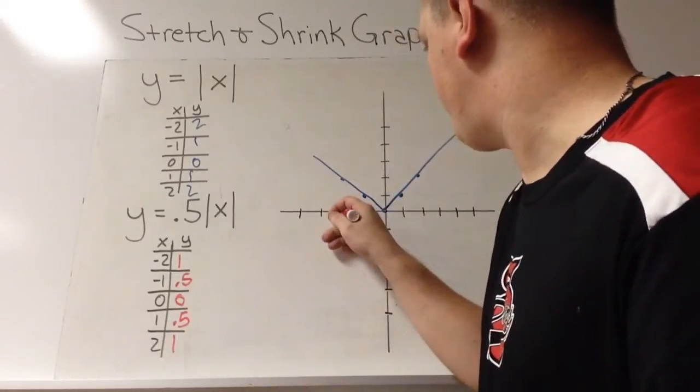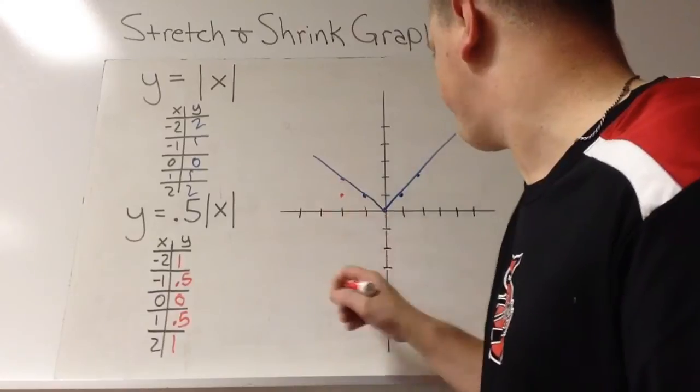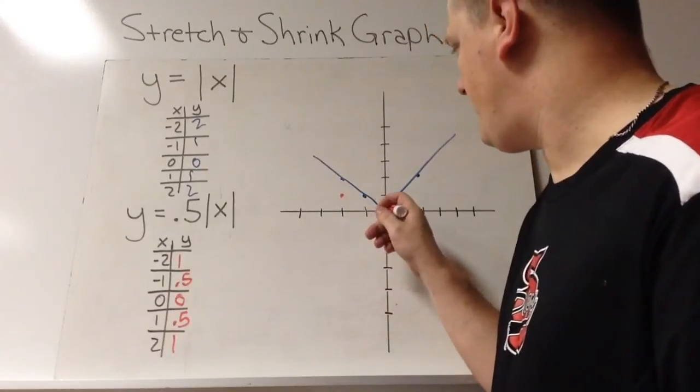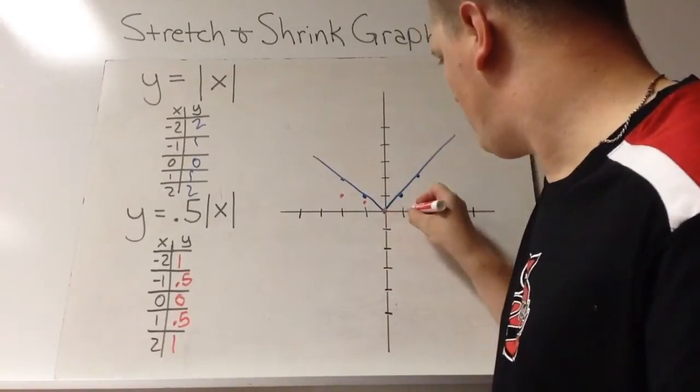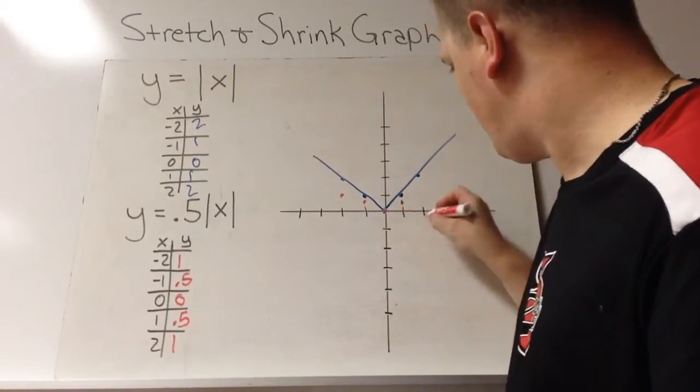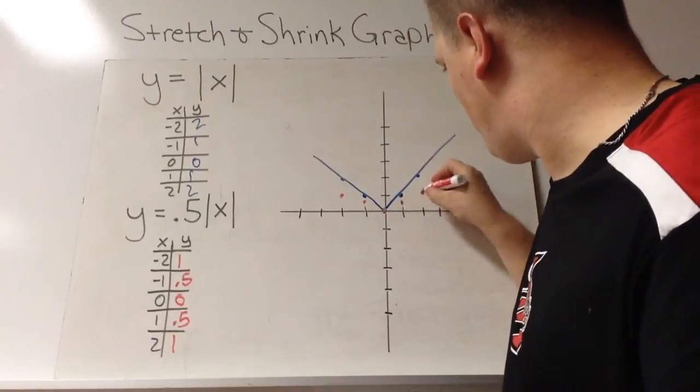I've got negative 2, 1. I've got negative 1, 0.5, 0, 0, 1, 0.5, and 2, 1.